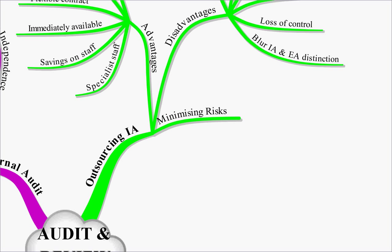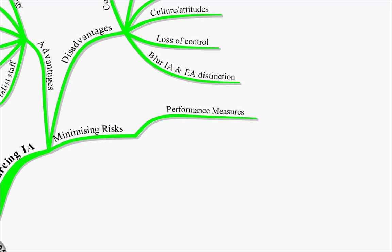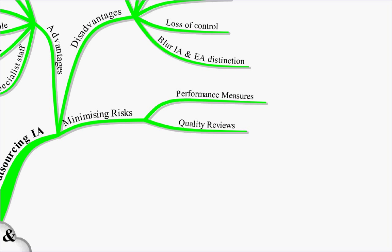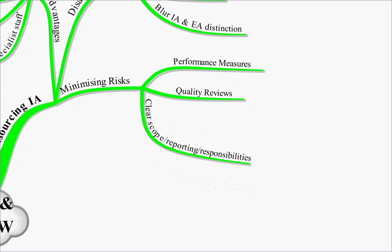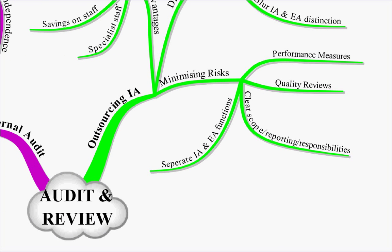How do these risks be minimised by the firm? Well you've got to put performance measures in place to ensure that the internal audit is doing what you want it to do. You'll have quality reviews to ensure that the quality of internal audit is there. And you'll make sure that there's a clear scope, a clear reporting responsibility, and a clear line of authority with internal audit. And you'll also make sure that you have separate internal audit and external audit functions. So that's outsourcing internal audit.